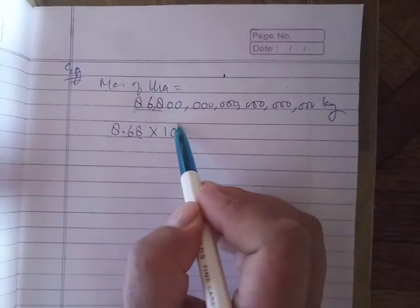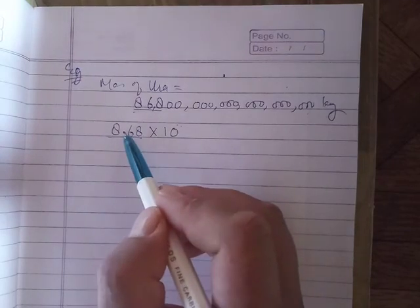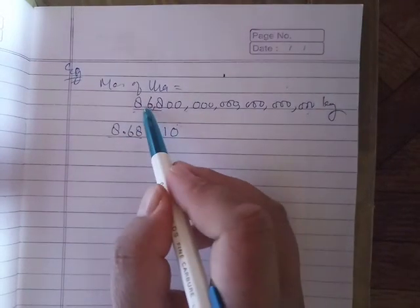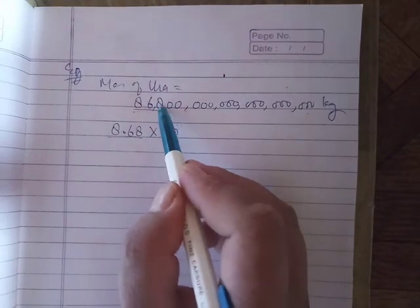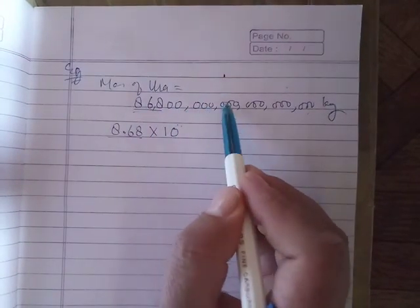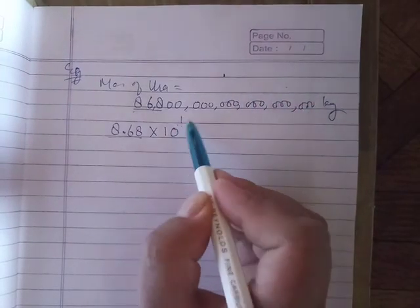Then count the digits: 1, 2, 3, 4, 5, 6, 7, 8, 9, 10, 11, 12, 13, 14, 15, 16, 18, 19. Power 19. So this is 8.68 times 10 to the power 19.